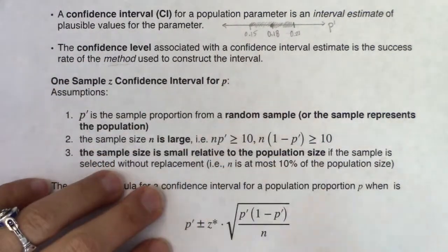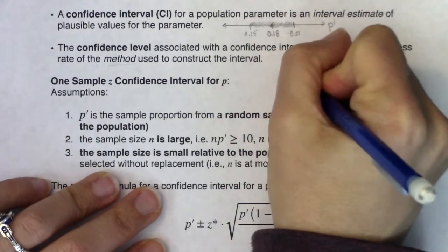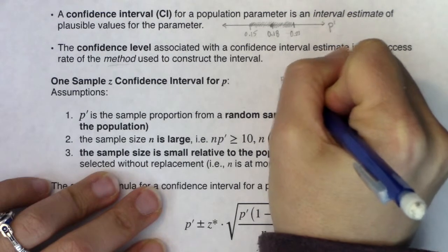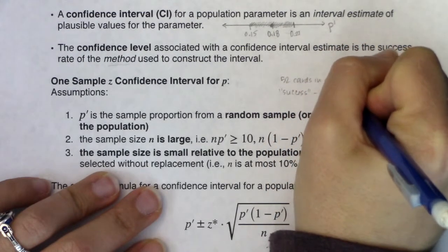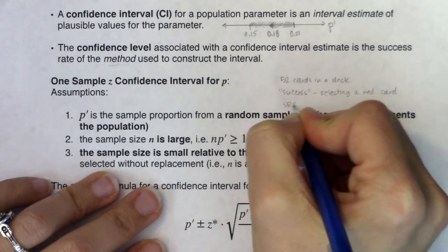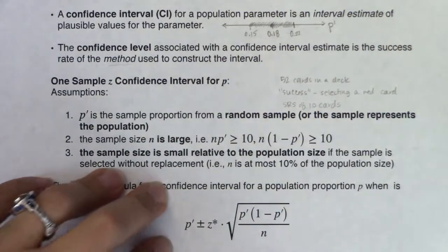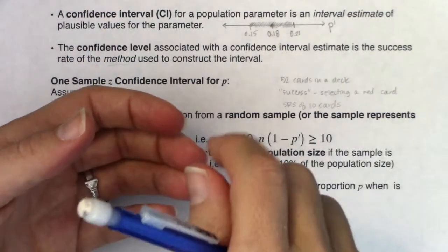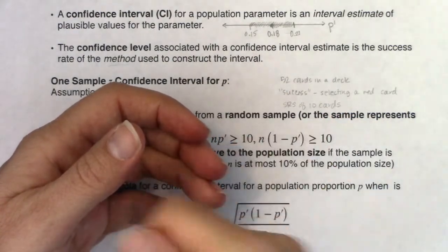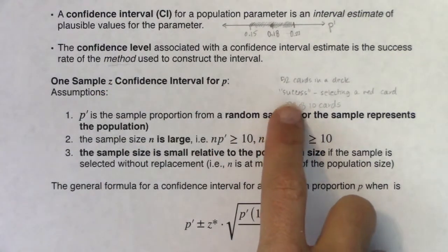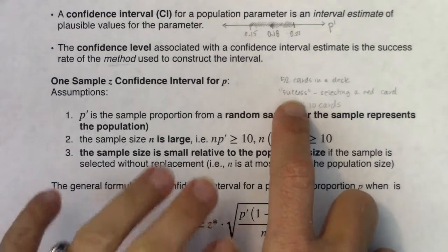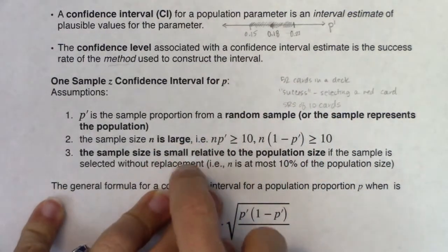Suppose I take a simple random sample of 10 cards without replacement. Each time I pull a card, I check red or black and discard it. I could get 0 through 10 red cards — this could be a binomial experiment — but I want you to think about how sampling without replacement affects the probability of success through each successive trial.